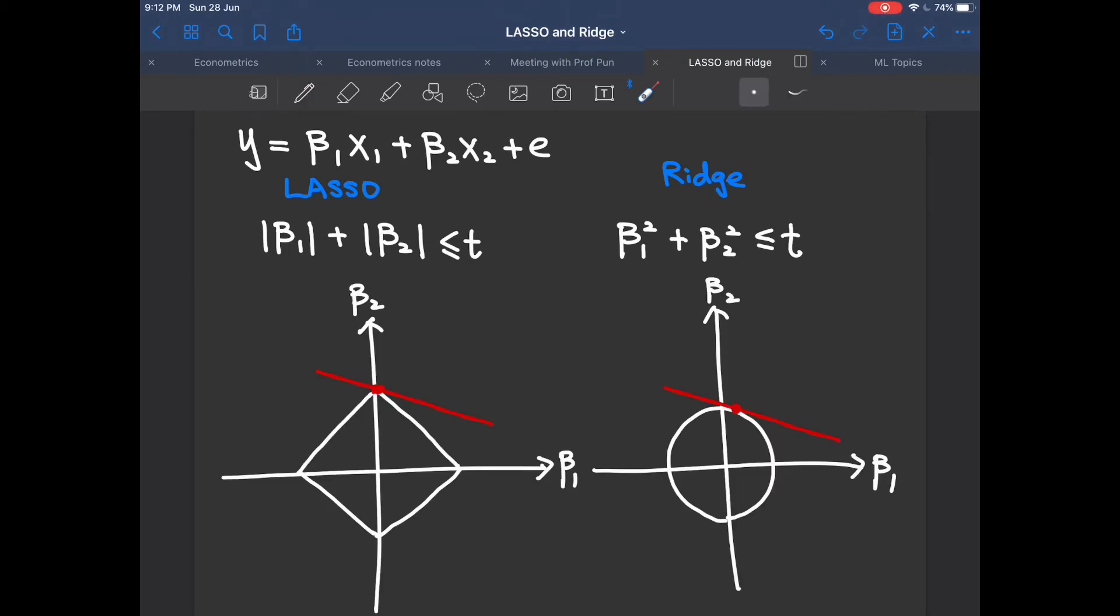When you plot the two constraints, the Lasso's constraint looks like a parallelogram whose edges are on the horizontal and vertical axis. As for the ridge regression, the constraint is a circle.